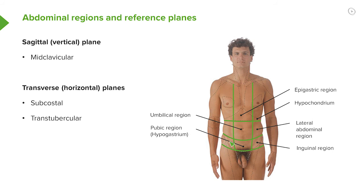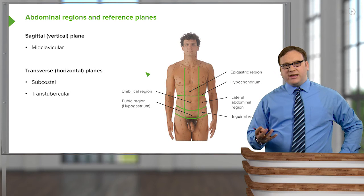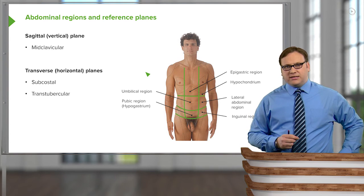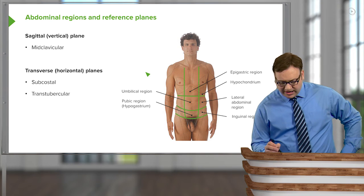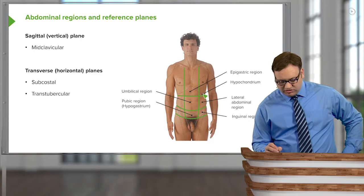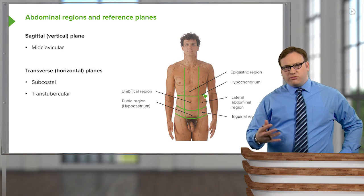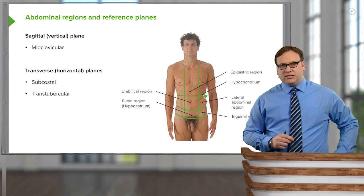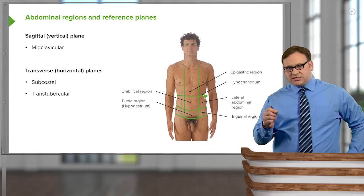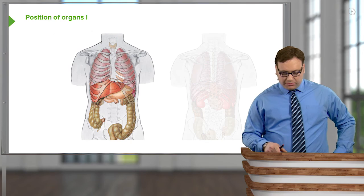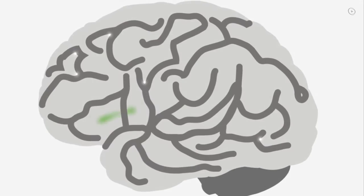For example, down in the right inguinal region our appendix is located, so if pain is radiating from this region, it may be an indication of appendicitis. We know that in most of the central regions we have the small intestine, and up in the upper left region we have the spleen. Through the course, we'll look at the position of these organs and how they relate to the surface of the abdomen. These surface landmarks, abdominal regions, and reference planes are really important.